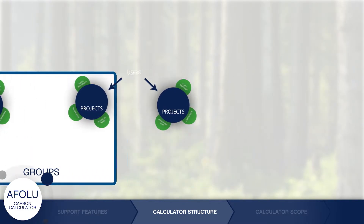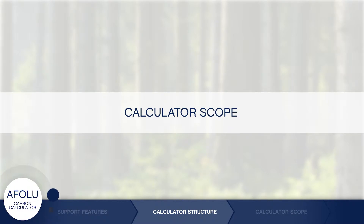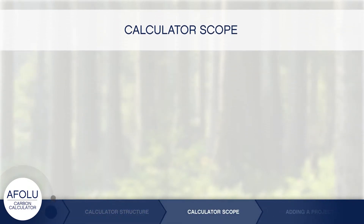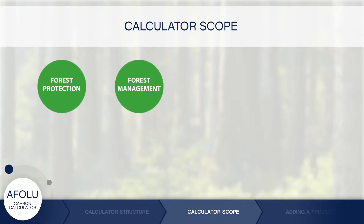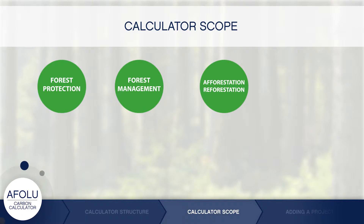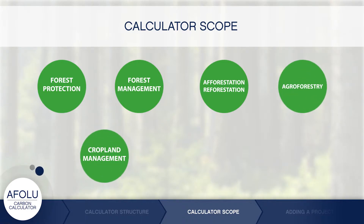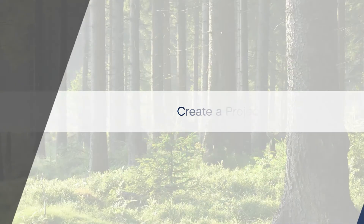The AFLU Carbon Calculator offers specific tools to estimate the greenhouse gas impacts of a range of land use activities, including forest protection, forest management, afforestation or reforestation, agroforestry, cropland management, grazing land management, and forest degradation by fuel wood.